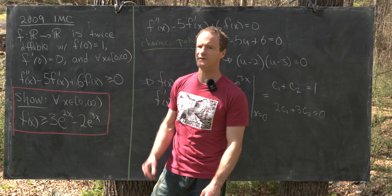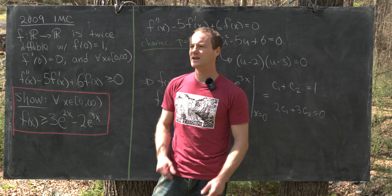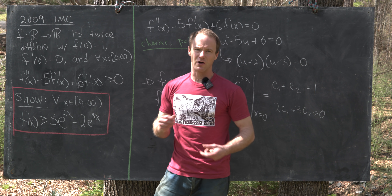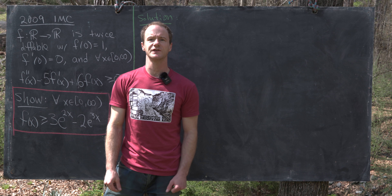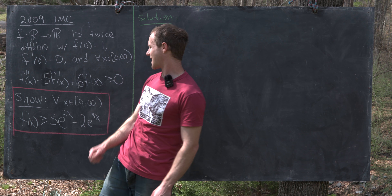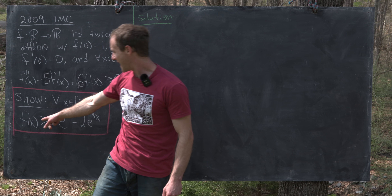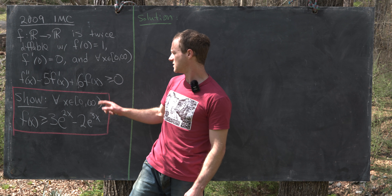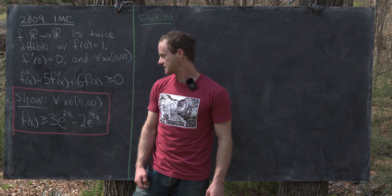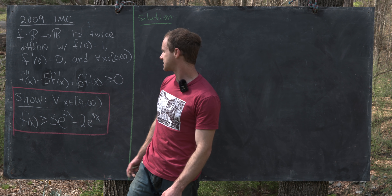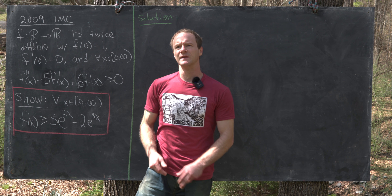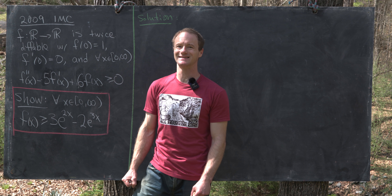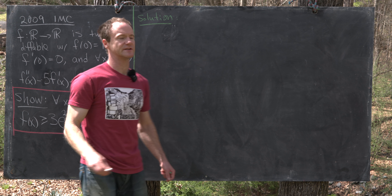Now let's jump into the actual solution, which uses another method for solving a differential equation that is less algorithmic and a little more creative. We want to show that f(x) ≥ 3e^{2x} − 2e^{3x} for all x ≥ 0. The idea is to rewrite the second-order differential inequality using methods from first-order differential equations.